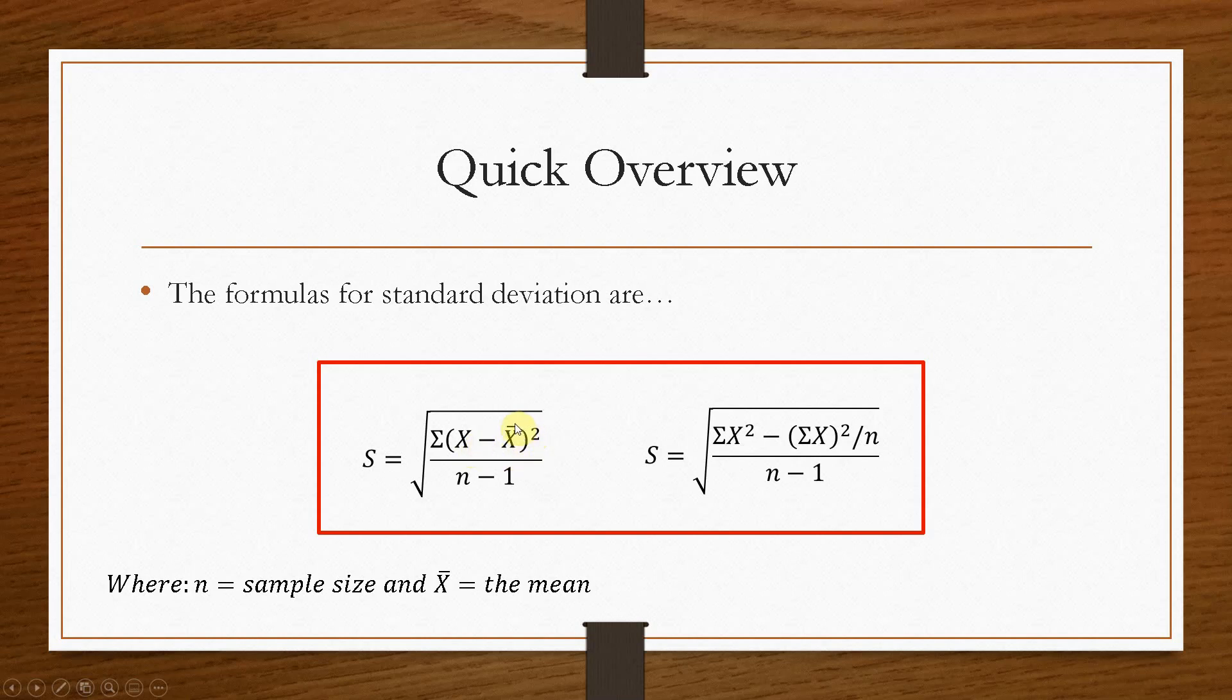Now x bar is the mean. Anything in terms of math and especially in science, if it has a bar on the top, it nine times out of ten will indicate that it is the average or the mean. So x bar is the average of all the x values.